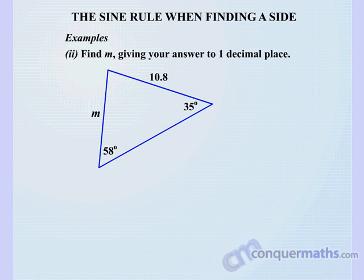Let's do a second example here. We need to find m, giving your answer to one decimal place. There's our sine rule. First step: there's m – need to identify what it's matching up with. Directly across, 35 degrees, so there's your match up.